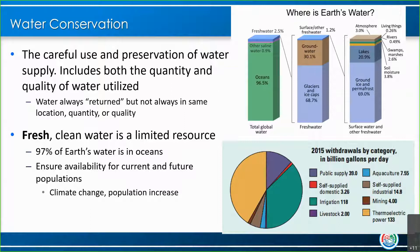The water that we have on earth is what we get — it is always returned, but it's not always returned in the same form, quantity, or quality. So fresh, clean water is a limited resource for us. About 97% of earth's water is within the ocean, so that's not usable fresh water. Only about 2.5% is fresh water, and even most of that is within glaciers and ice caps. We have a lot in groundwater and a very small percentage of our fresh water is surface water.